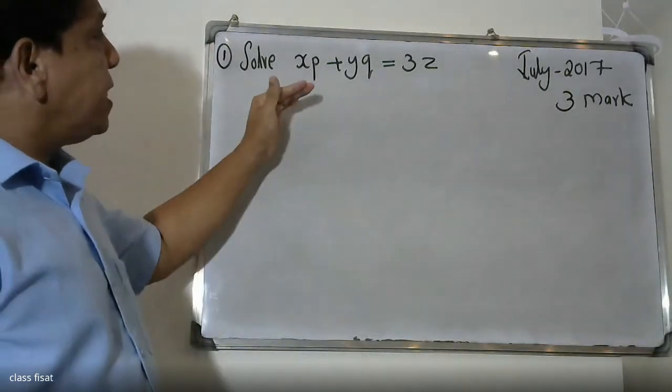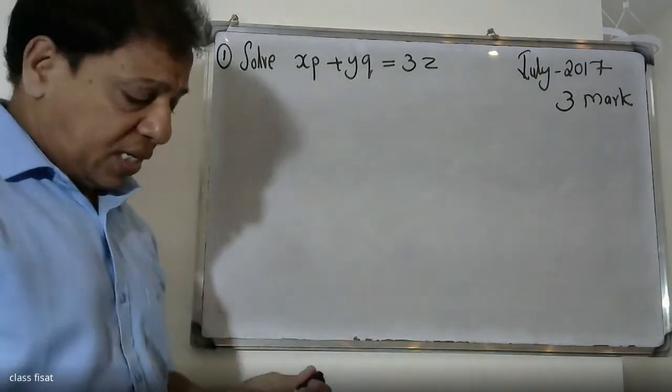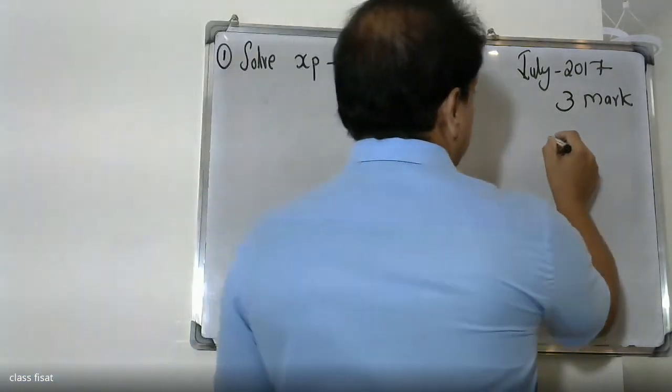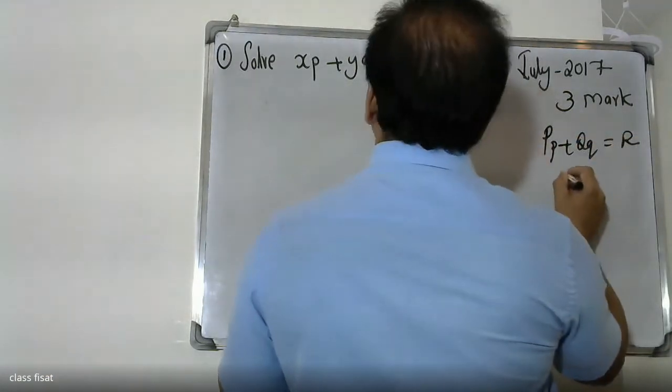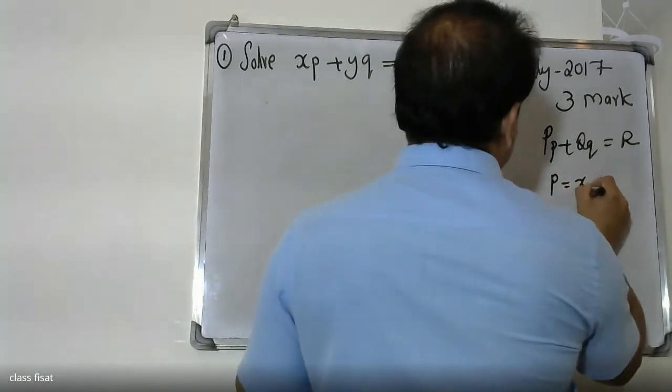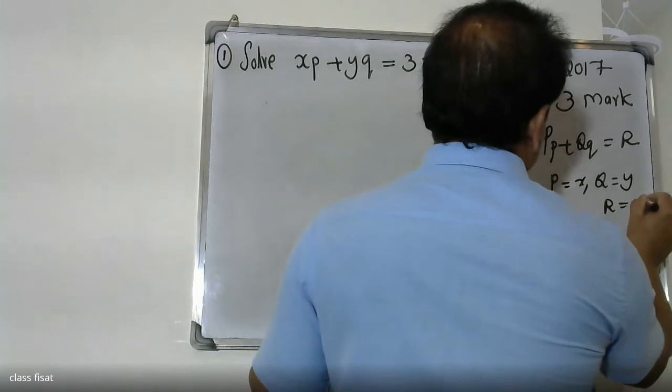The question is XP plus YQ equals 3Z. Lagrange's linear equation. Lagrange's linear equation in standard form: P dx plus Q dy equals R dz. What is P? P equals X. Q equals Y. R equals 3Z.